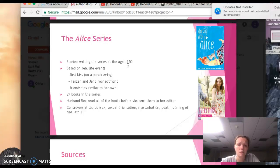A number of events in the Alice books are based on her real life, such as her first kiss on a porch swing with her boyfriend Patrick, which mirrors Phyllis's first kiss. She also reenacted a Tarzan and Jane scene in school, which appears in the Alice books. Many of the friendship stories are similar to Phyllis's as well. There are 27 books in the series, and she had her husband read every book before sending it to the editor. She stopped writing the books when her husband died.